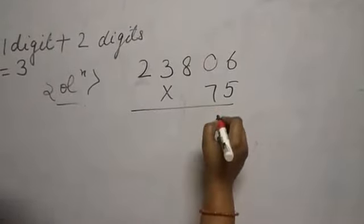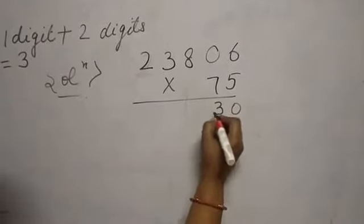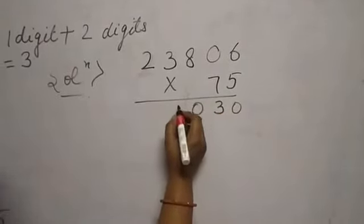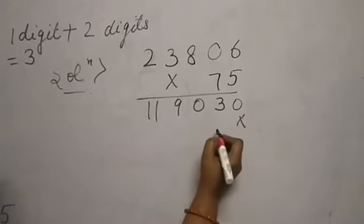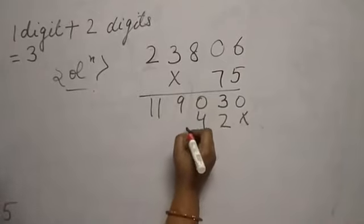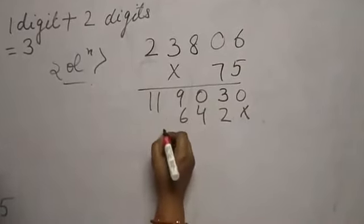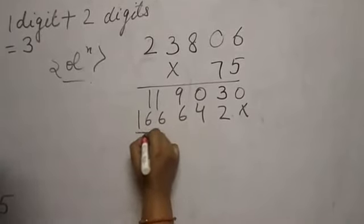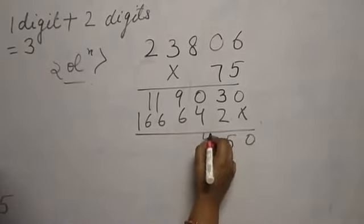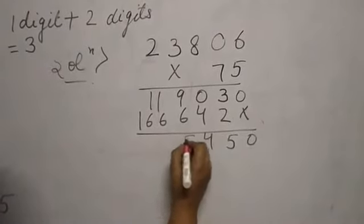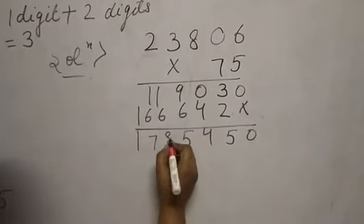Carrying out the multiplication of 23806 × 75, we get the result: 1785450. This is your result.